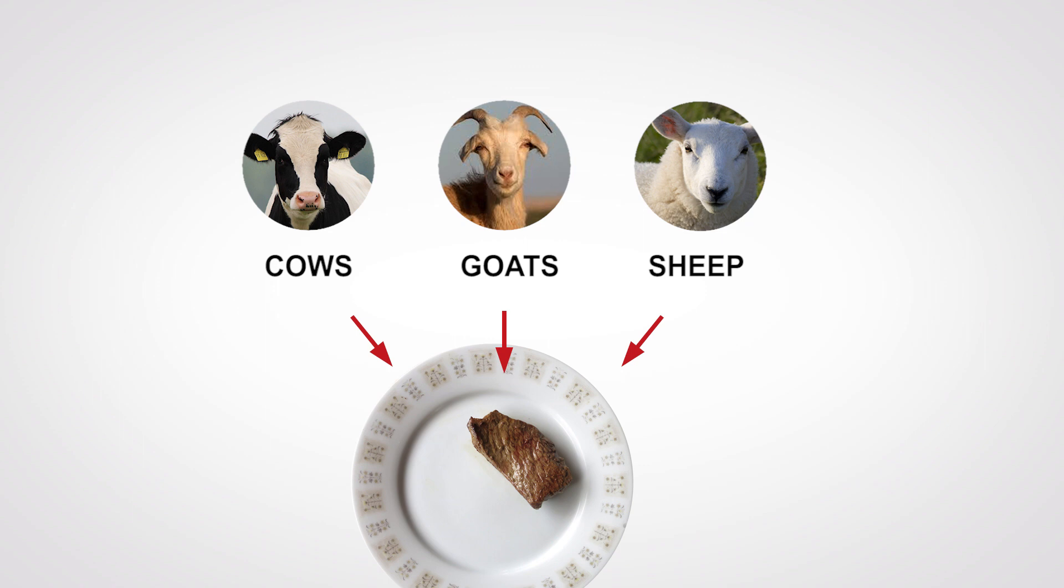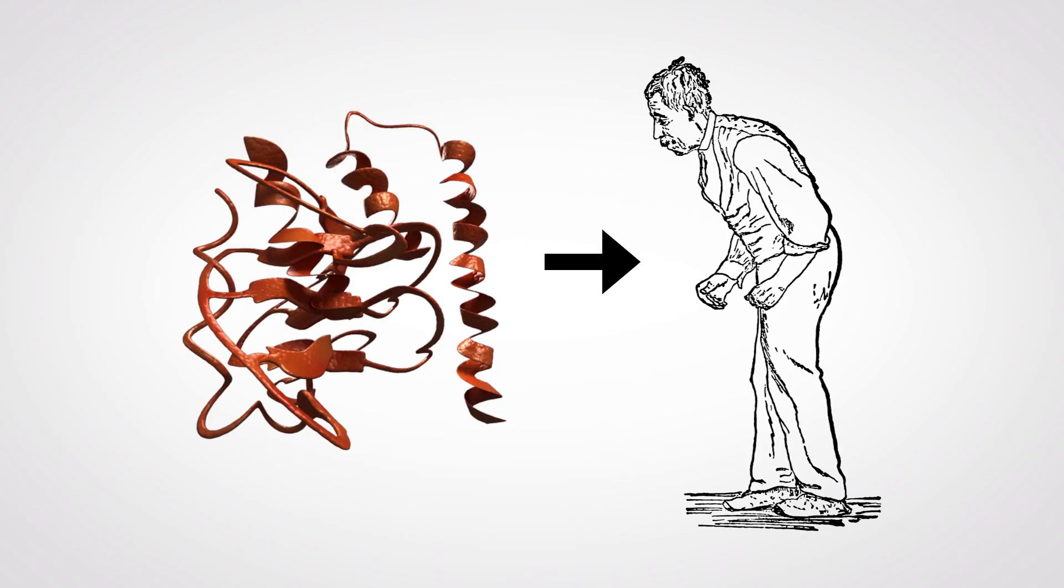And the really bad news is that if you get just one prion in your body, it can start a cascade of damage that eventually makes your nervous system non-functional. This can take 20 or 30 years to happen. It's a relentless process of slow degeneration.